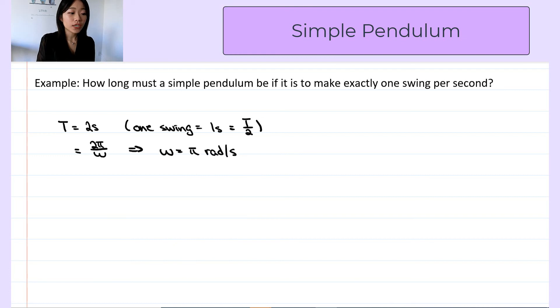And we just learned that the angular frequency for simple pendulum is square root of g over the length, and we want this to be pi.